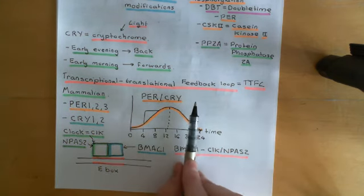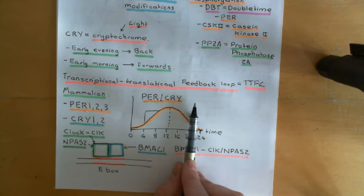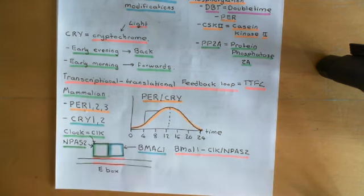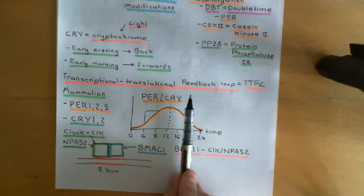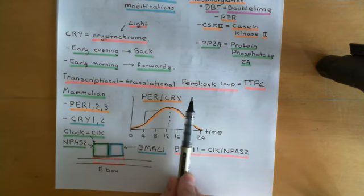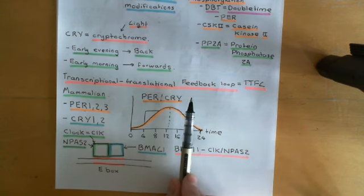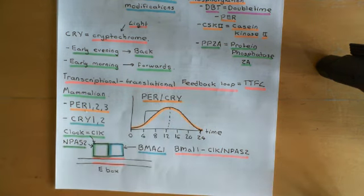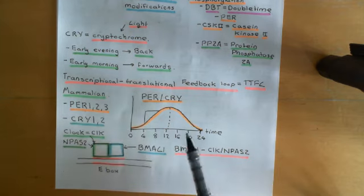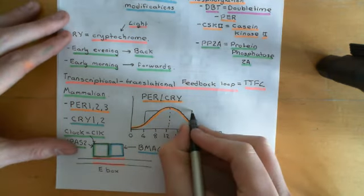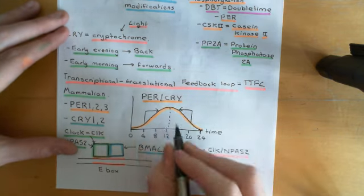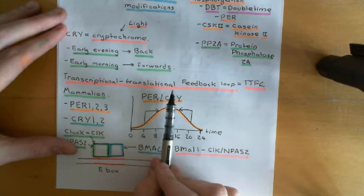That increase in period and cryptochrome will move the clock forward — if your clock thinks it's 4am but there is very bright light, it will reset your clock to think it's later in the day, perhaps 8am or midday. Conversely, if your clock thinks it's 8 o'clock but the real time is midday, bright light activates photoreceptive ganglion cells, they release more glutamate and PACAP, period and cryptochrome go up, and the clock is moved backwards towards midday. It's moving your circadian clock towards thinking it's midday, where light will be brightest.